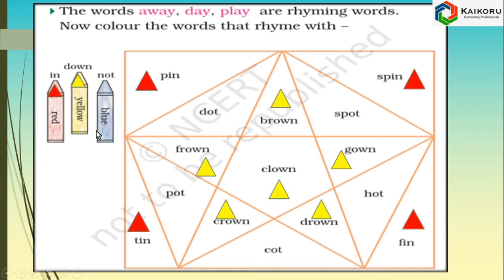Color the words which have a rhyming word with 'not.' Color it with blue. The words are: dot, spot, caught, hot.